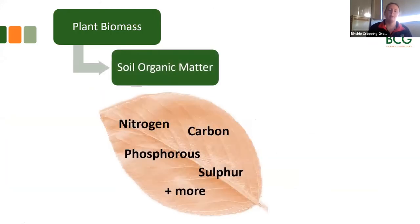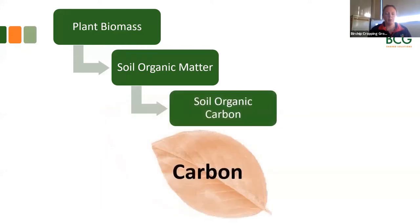Plant biomass then becomes soil organic matter — it's the plant biomass that's broken down and makes it into the soil. Soil organic matter is really important, especially in cropping systems, because it contains a lot of our nitrogen, phosphorus, sulfur, and other nutrients for the crop, as well as carbon. When people talk about soil organic carbon, that's just the part of the soil organic matter that is carbon — the part of the plant that was once starch or sugar but is now sitting in the soil.